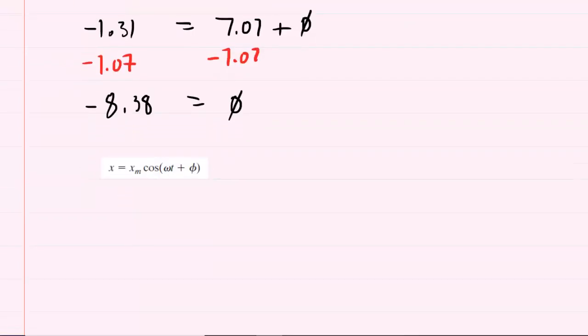Remember that x was 0.129 meters. This will equal the amplitude times the cosine of our angular frequency times one second plus our phase constant, which was negative 8.38.